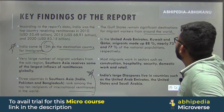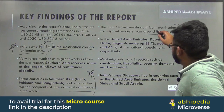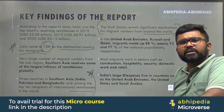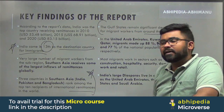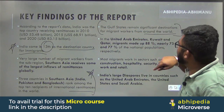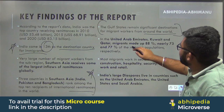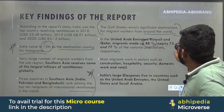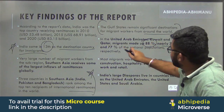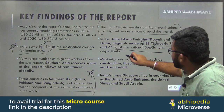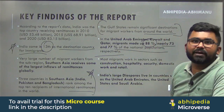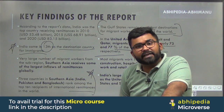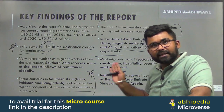The Gulf states remain a significant destination for migrant workers from around the world, and migrants make up the major chunk of their population. In UAE, Kuwait, and Qatar, migrants made up nearly 88%, 73%, and 77% of the national population respectively.